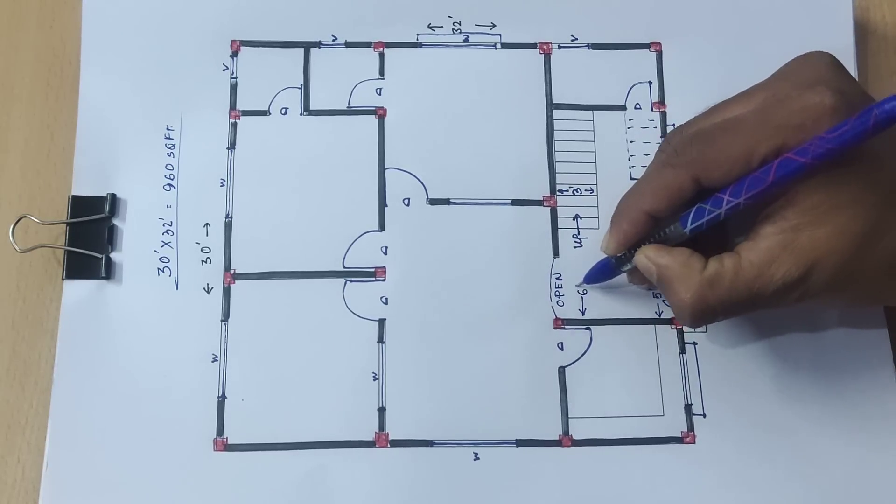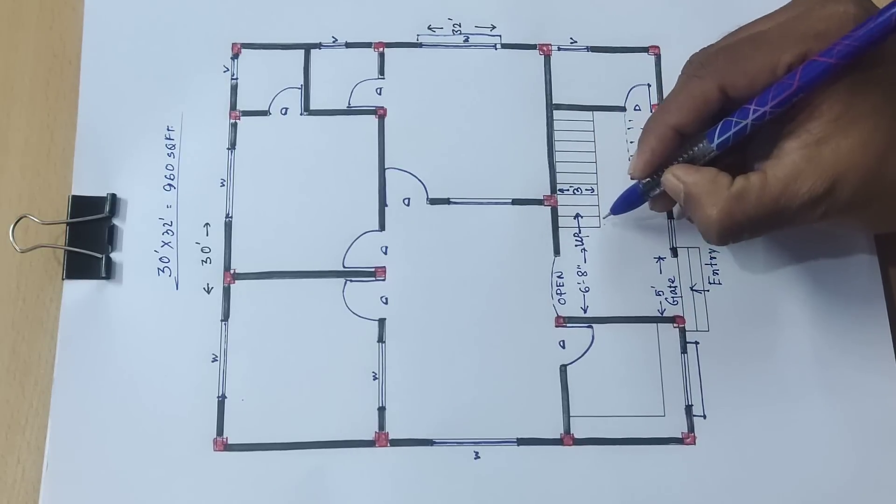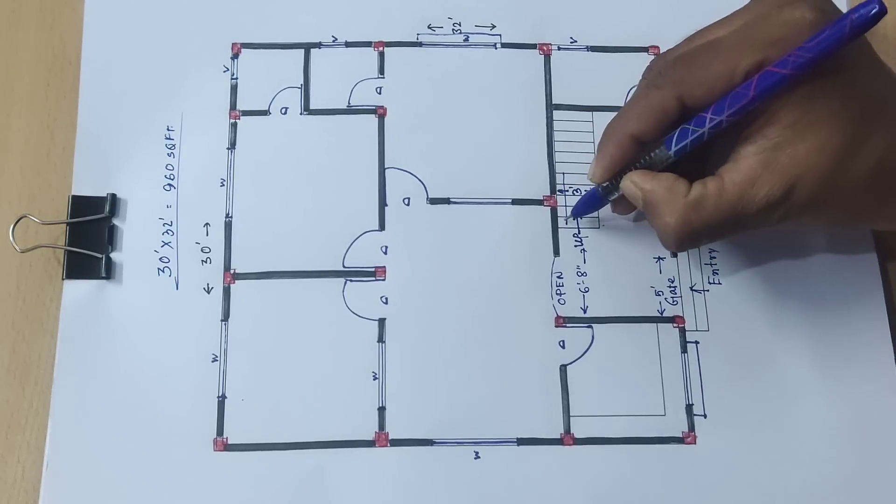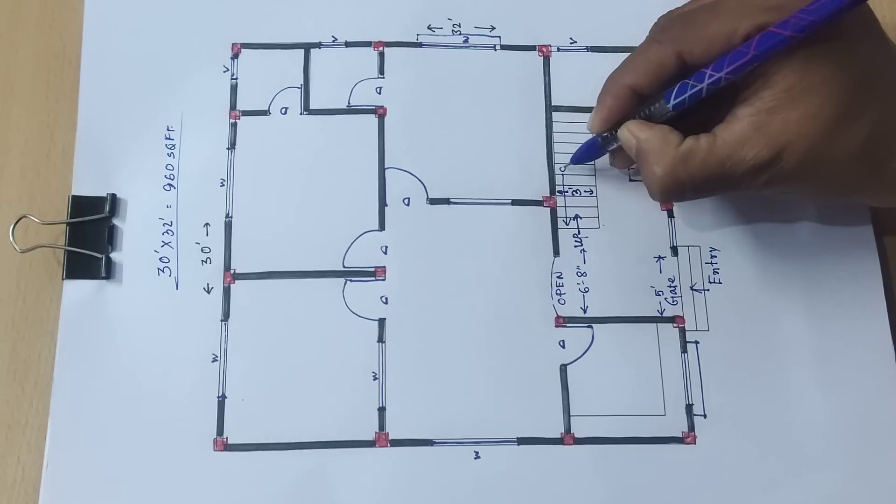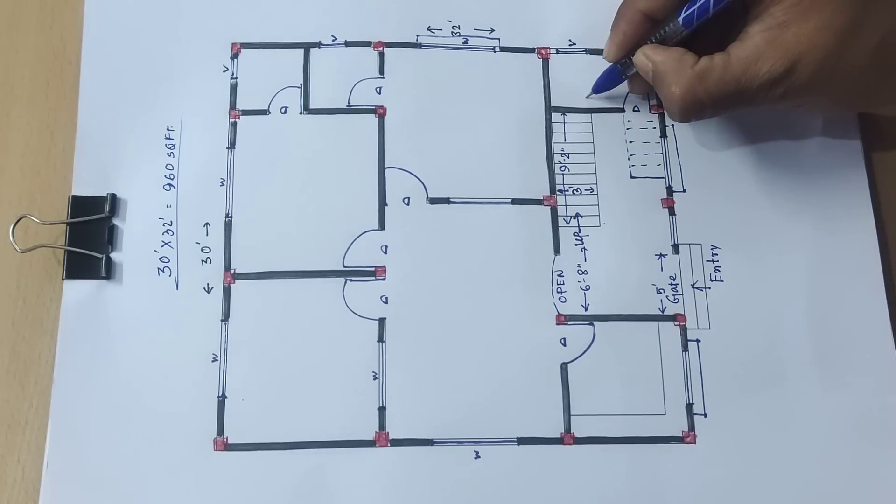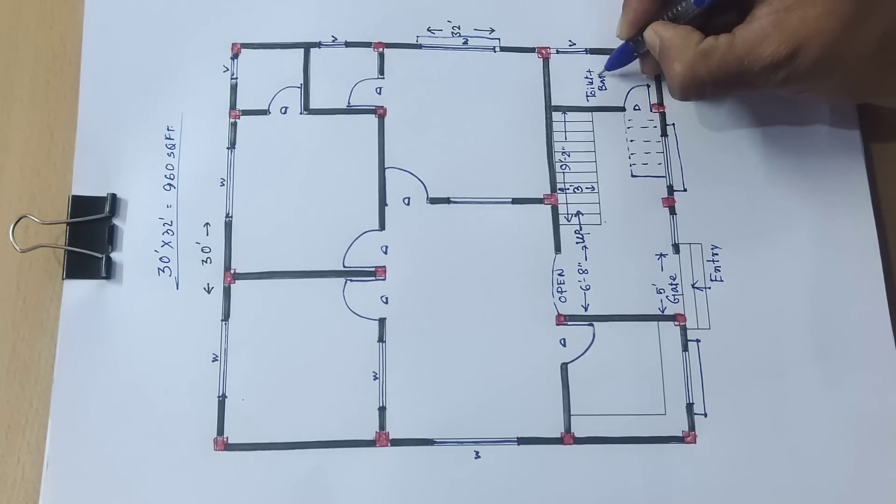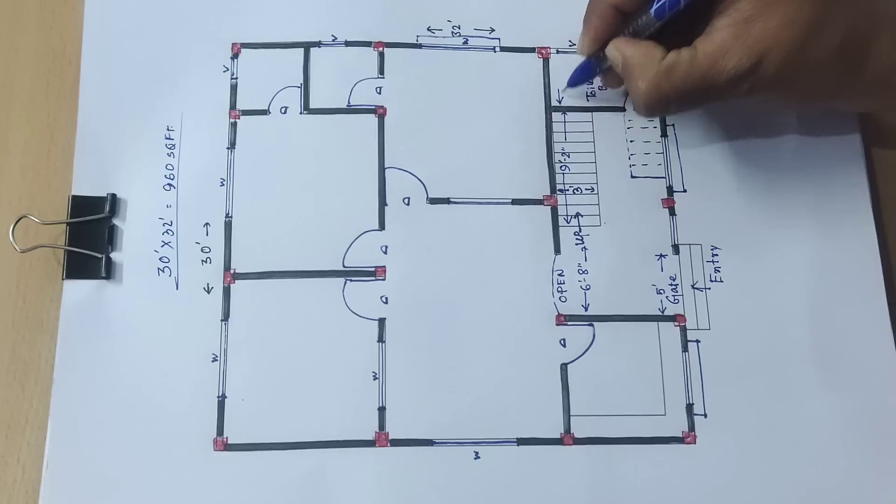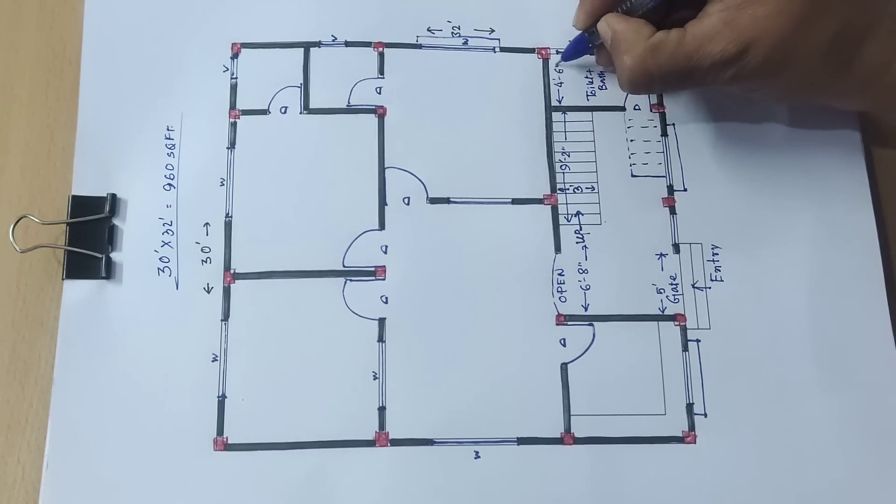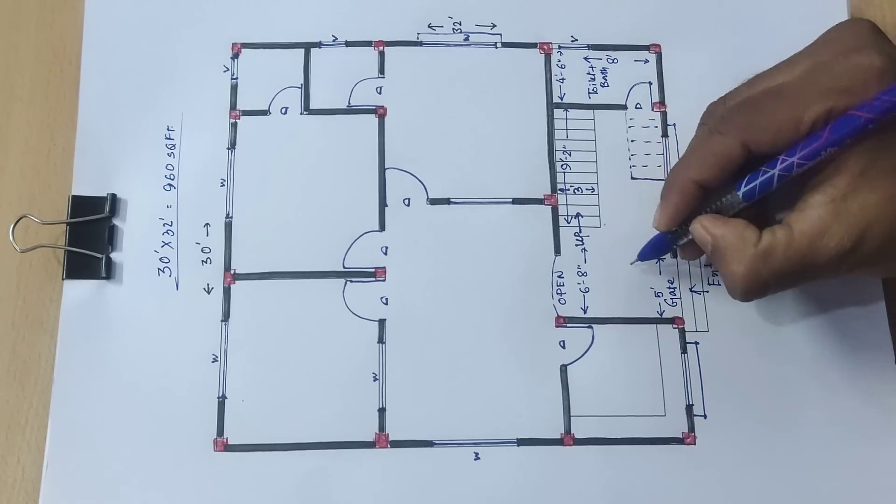6 feet 8 inch wide it will be. Or here, entry will be wide. And here toilet plus bath, 4 feet 6 inch and 8 feet.